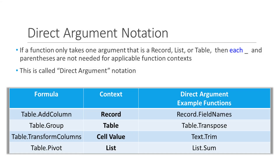We'll now discuss direct argument notation. If we use a function that only takes one argument, and the needed argument is a record, list, or table, then using each underscore, and even the parentheses, is not needed if the function is used in the applicable context. The table shown here gives examples of four functions, their context, and one example of the function that can be used with direct argument notation.